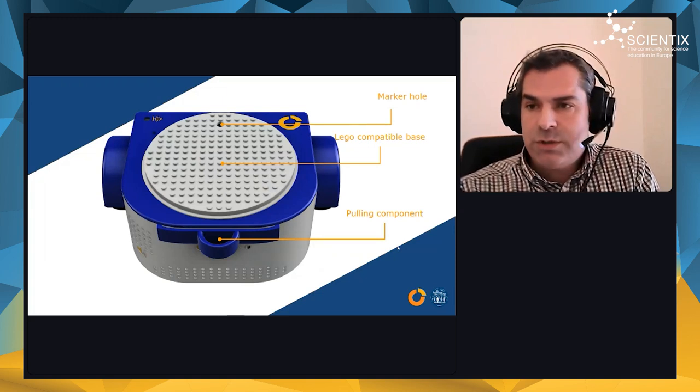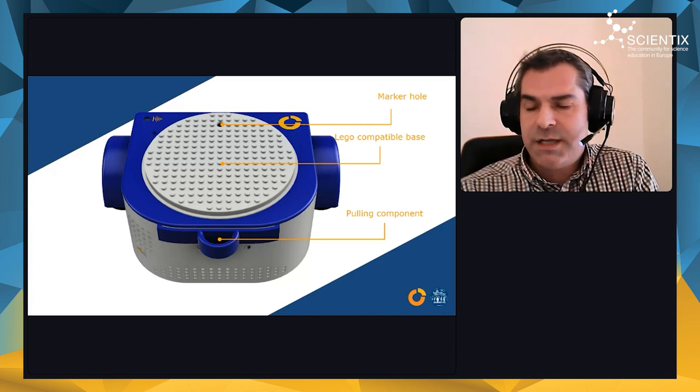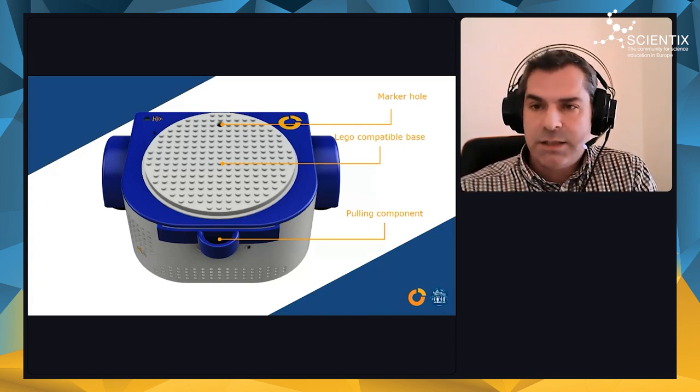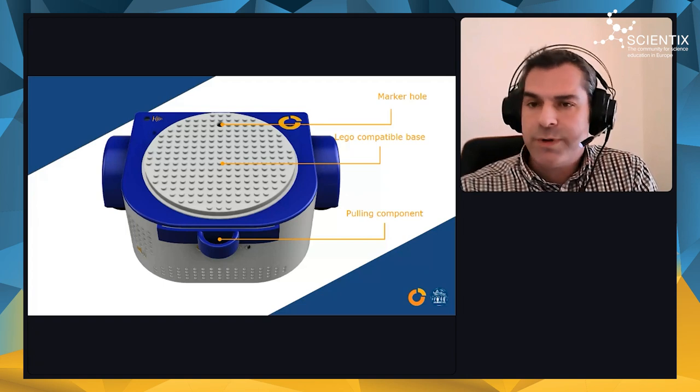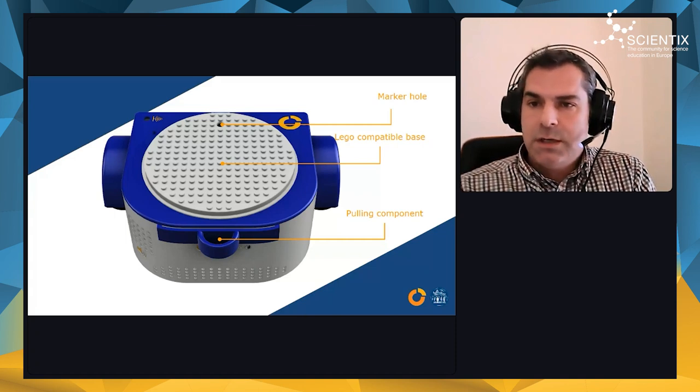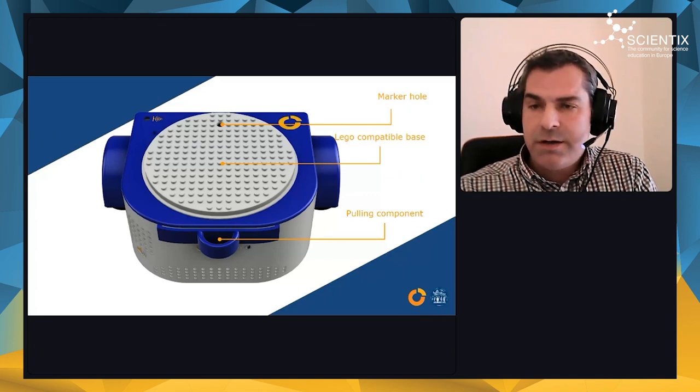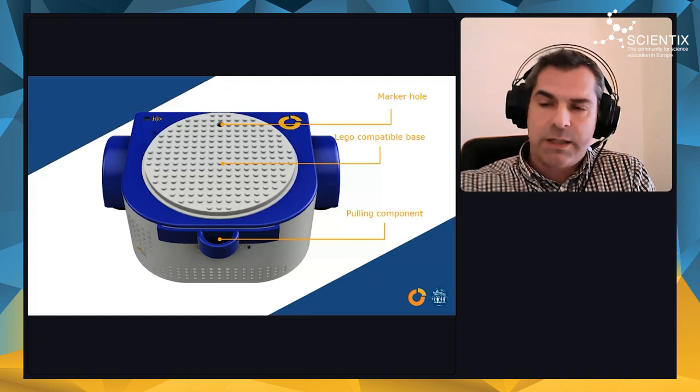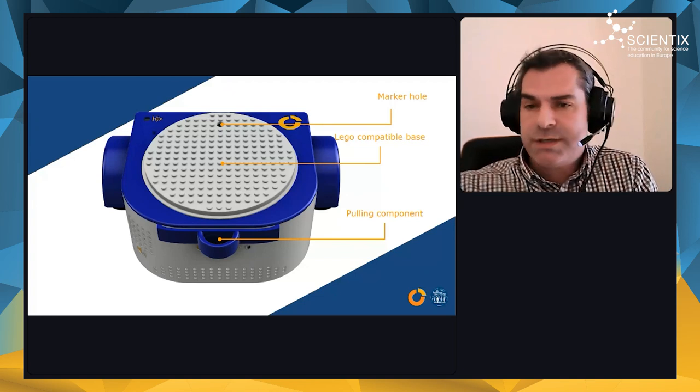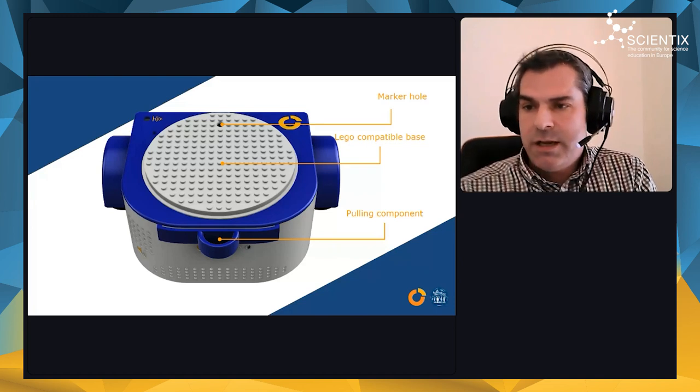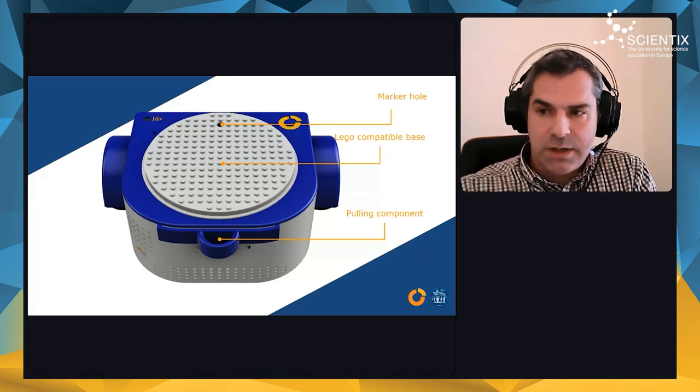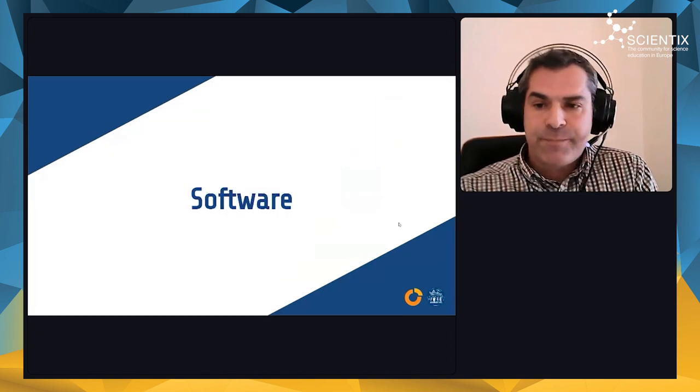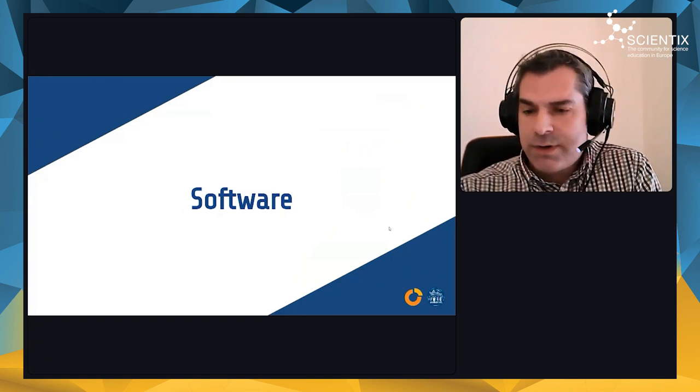If we look at the top side of the robot, we can see the top lid which can open easily and give us access to the inside. It has engraved a base where we can put LEGO bricks on top in case we want to create activities that use additional LEGO bricks. We can also attach a marker in this special marker hole that goes from top to bottom, and it has a pulling component on the back side for towing large items.